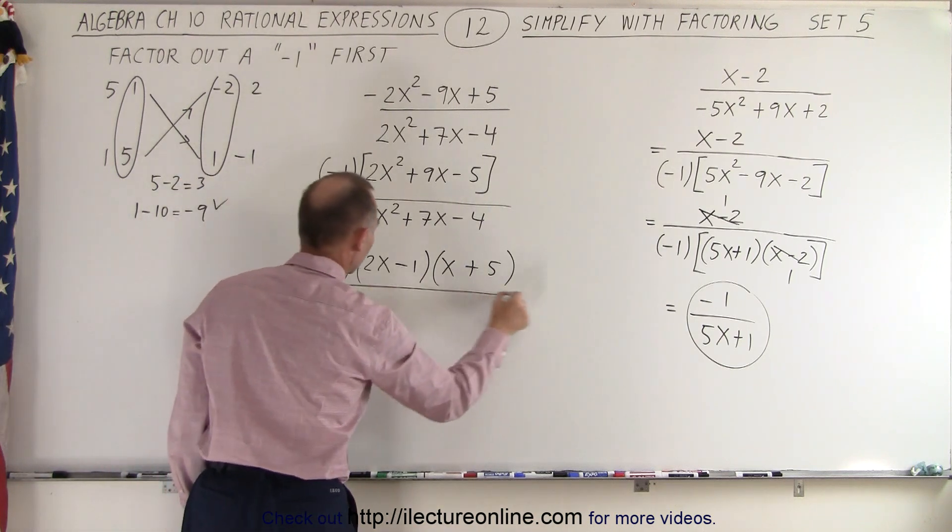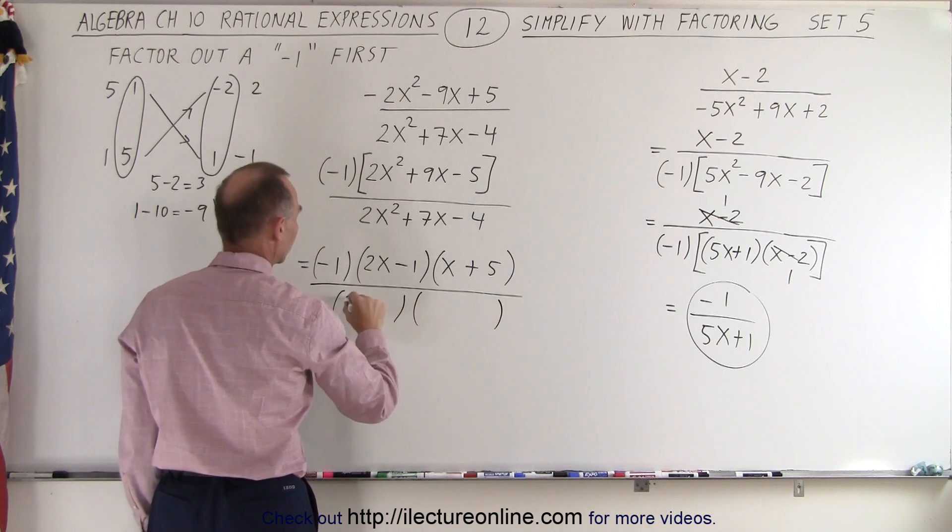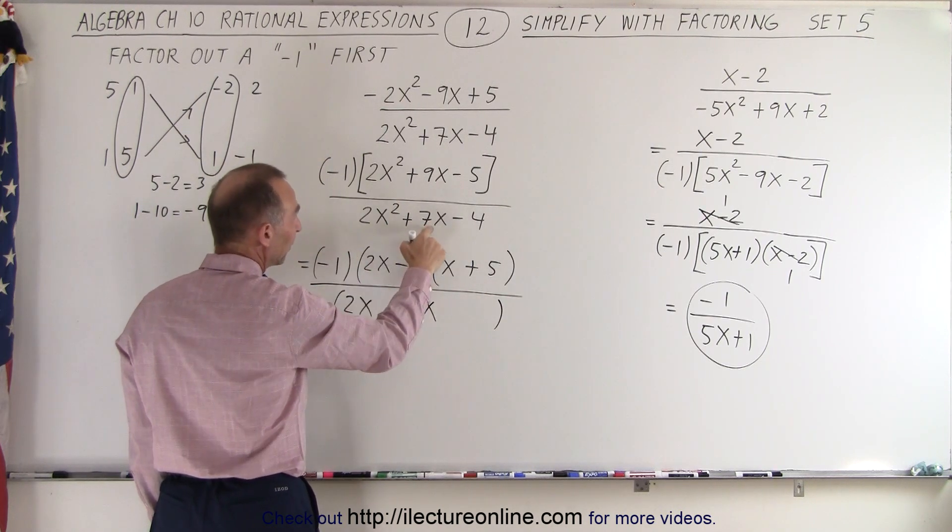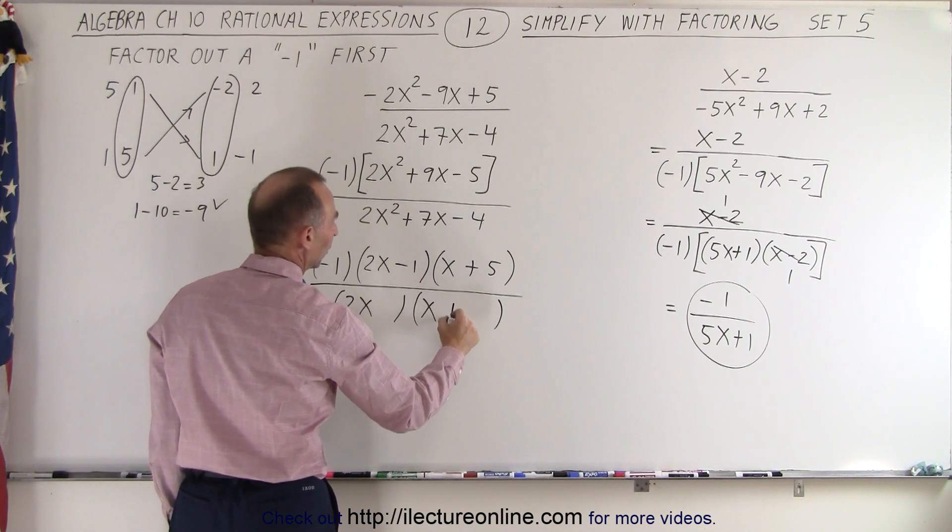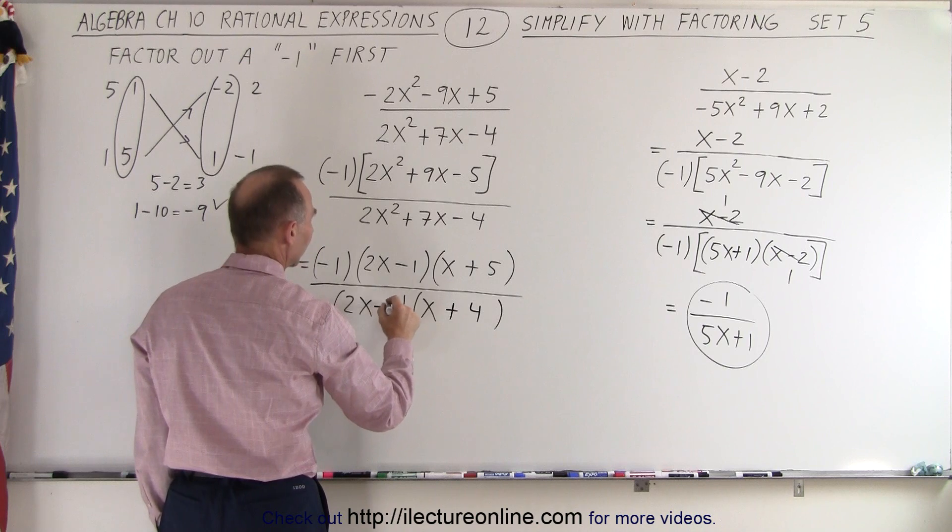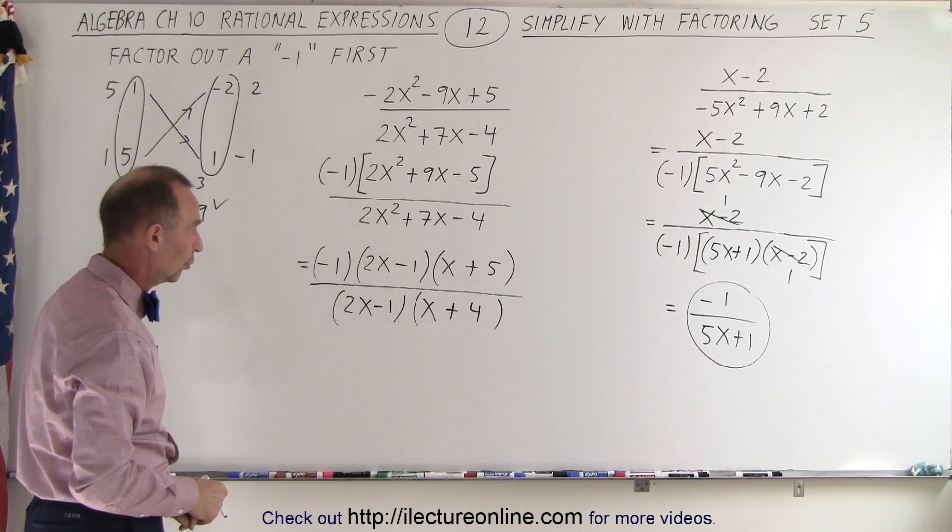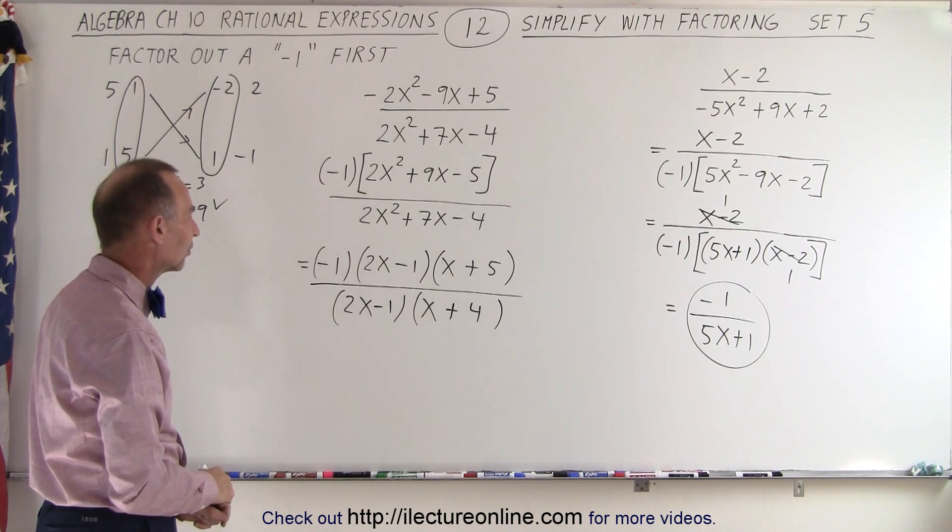For the denominator, we can do something similar. We have the product of two binomials. We need a 2x and an x. We need a positive and negative number. We need a big middle term. So how about a 2x and a plus 4 and an x minus 1? So 2 times 4 is 8, minus 1 is 7. And we get the correct middle term. So sometimes we can see right through the problem and find the good factors.